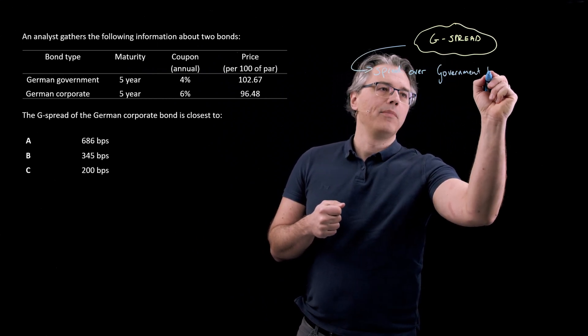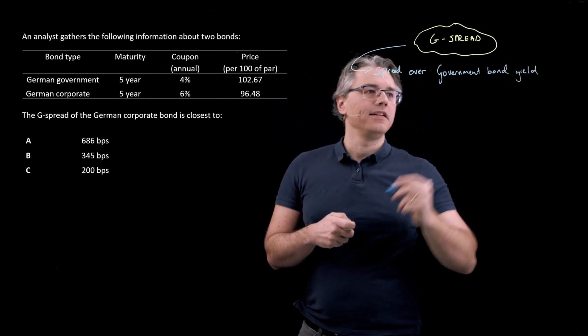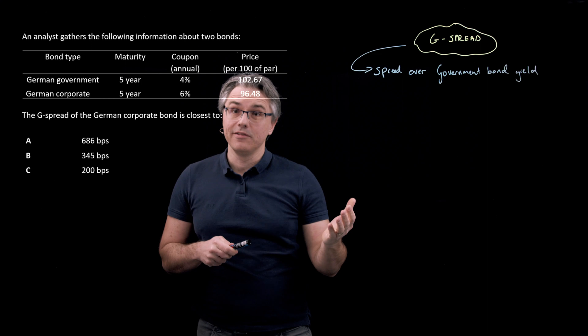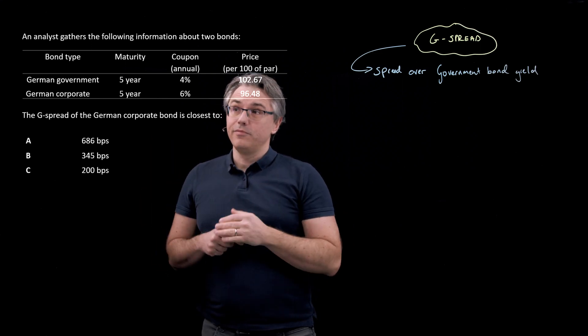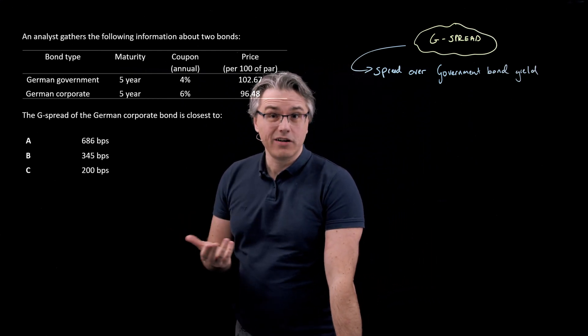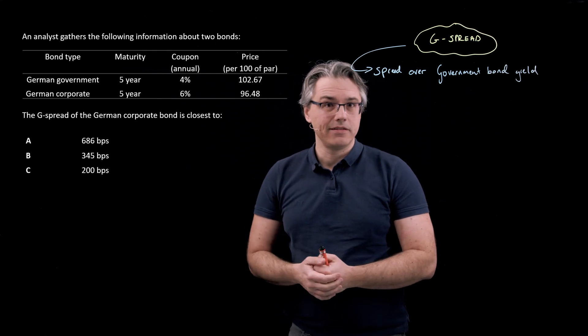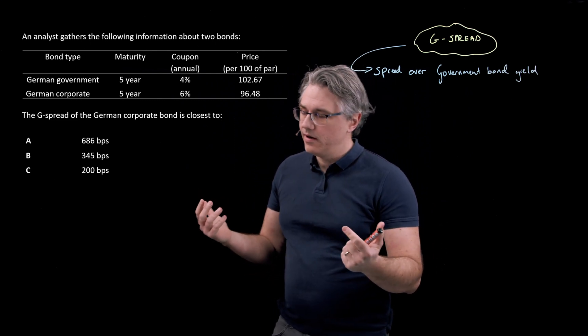Government bond yield. And this is simply going to be in the end a difference in yields to maturity for the two bonds. Hopefully what will come out is that the German corporate bond will have a higher yield to maturity than the German government bond and we'll just compute the delta, the difference, and that's going to be the answer.